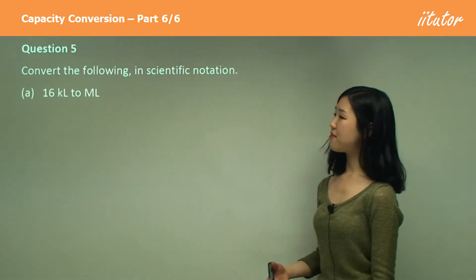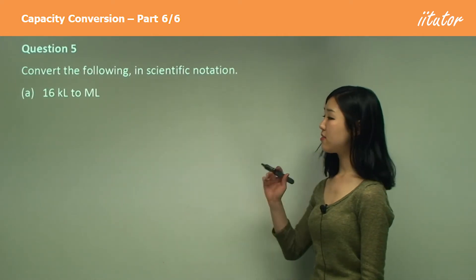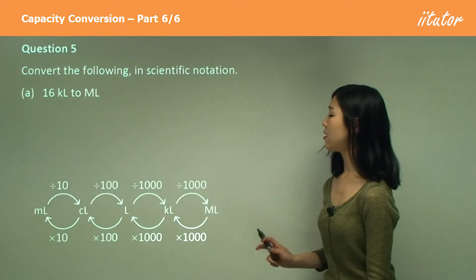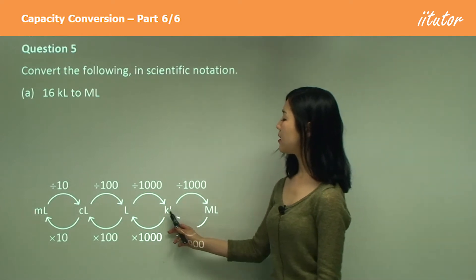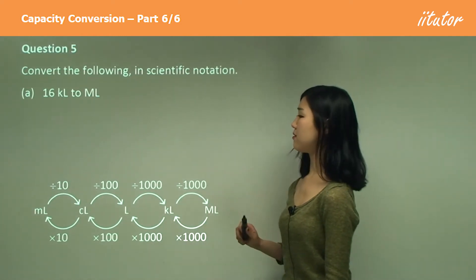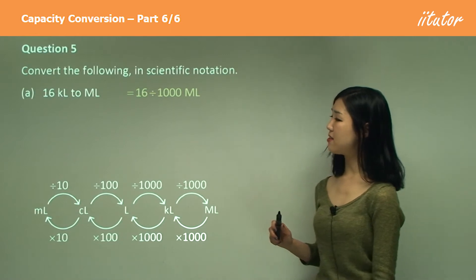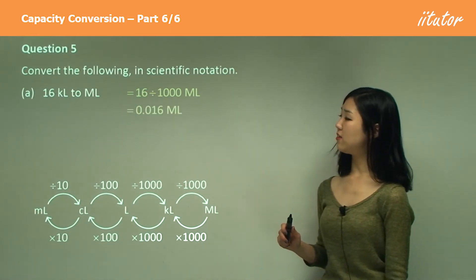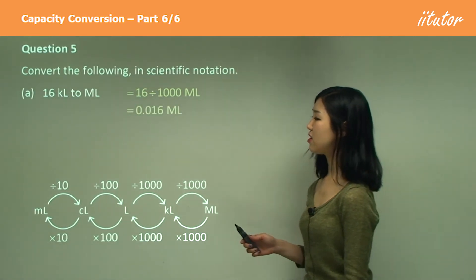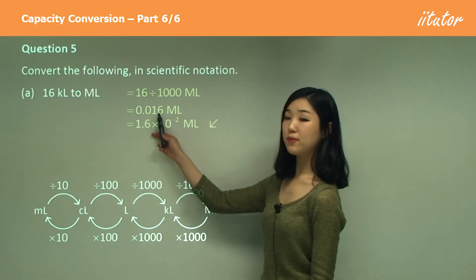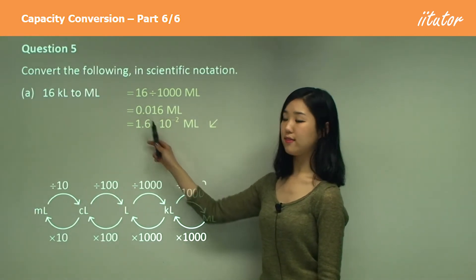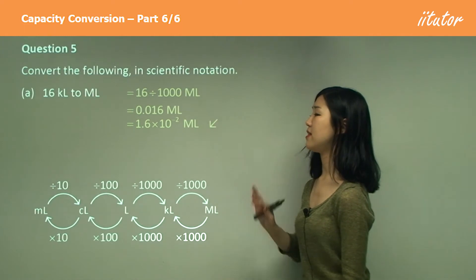Question 5 — same kind of question. This time we're going from kilolitres to megalitres, which is small to large, so we must divide. So 16 divided by a thousand gives 0.016. In scientific notation, if I put the decimal place in front of the one, we have to go back two places — so 10 to the power of negative 2.